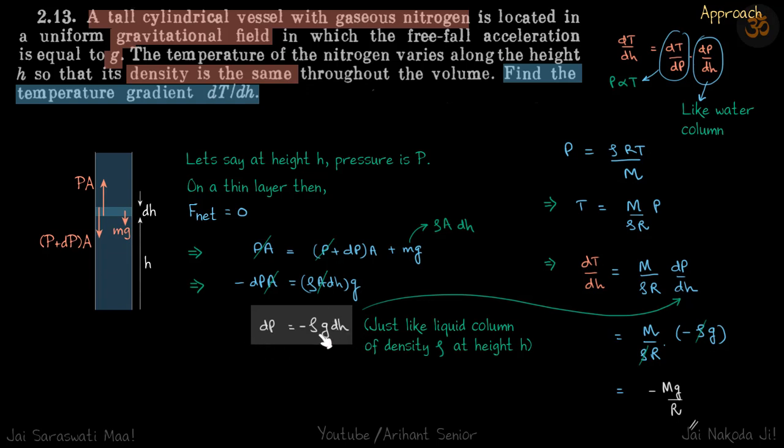So now we have dP is equal to minus rho g dH, which means we have got this term dP by dH already. So only this term is left. So let's talk about this term. So we know p is proportional to t. So let's write it in that form. So p is equal to rho RT by m. And because rho, r, and m are constants we can say dT is equal to m by rho r dP. So we have this term dT by dP also now.